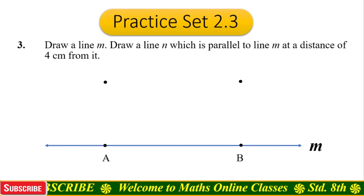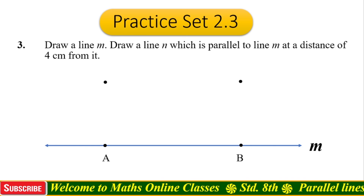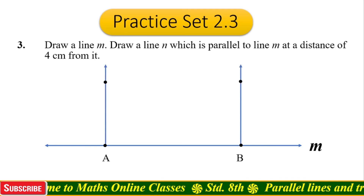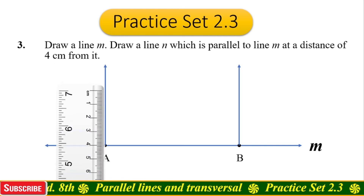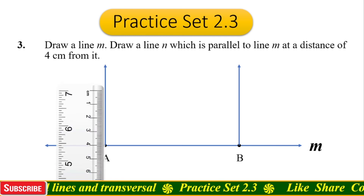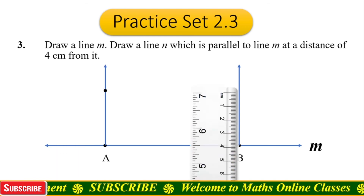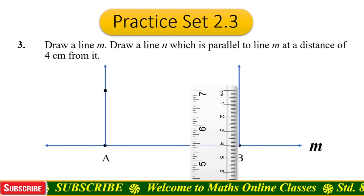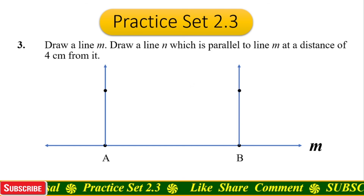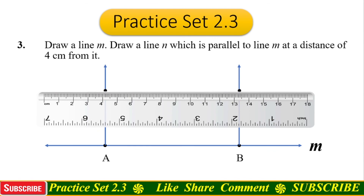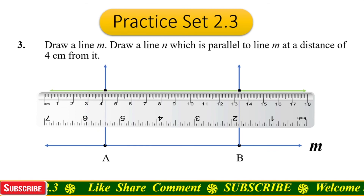Now draw perpendicular rays from point A and point B which pass through the new points. Take a scale and keep it on the first ray — measure four centimeters and take a point at four centimeters. Now measure four centimeters on ray B and take a point at four centimeters.